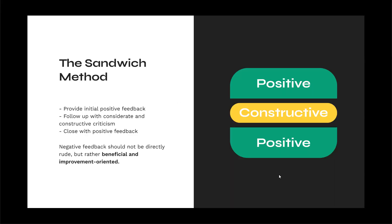The sandwich method is a method to give good critique. First, provide positive feedback; follow up with considerate and constructive criticism; then close with positive feedback. Your negative feedback should not be directly rude, but rather beneficial and improvement-oriented. Don't just say 'I don't like this' — say 'I think this could be improved because...' and give a reason and a suggested way to improve the issue.